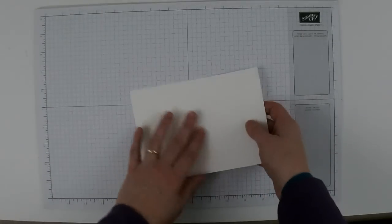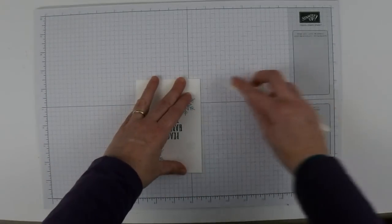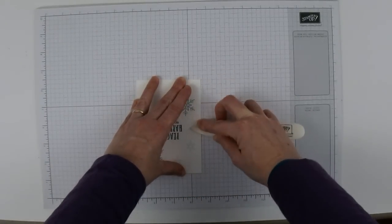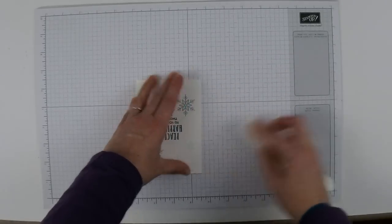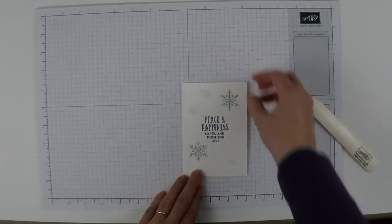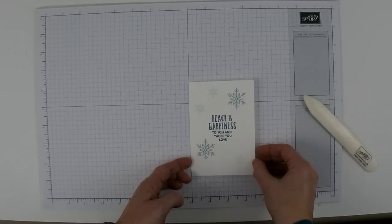Then I'm going to fold this card along the score line. I'll take my bone folder to help smooth down that fold.